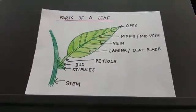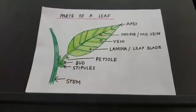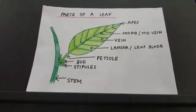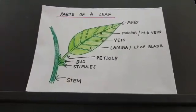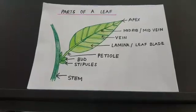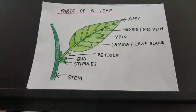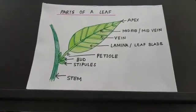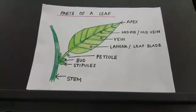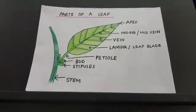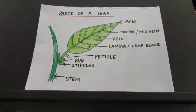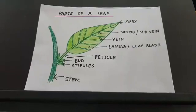Do you know why the leaves are green in color? It is green in color due to the presence of a green colored pigment called chlorophyll. The function of chlorophyll is that it imparts green color to the leaves and also absorbs or traps energy from sunlight.